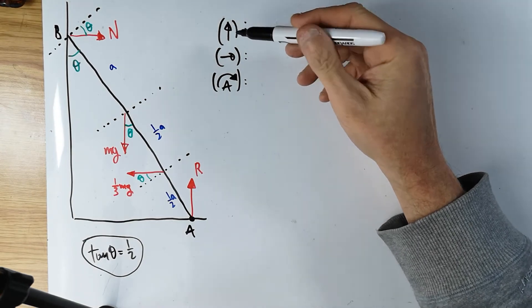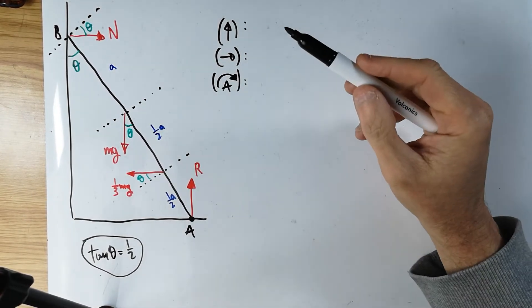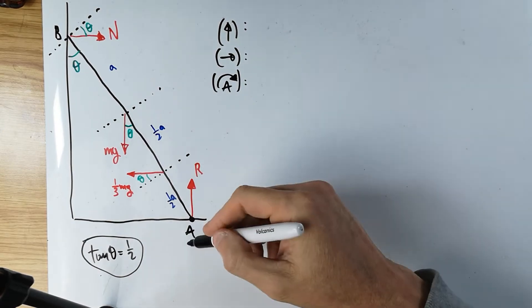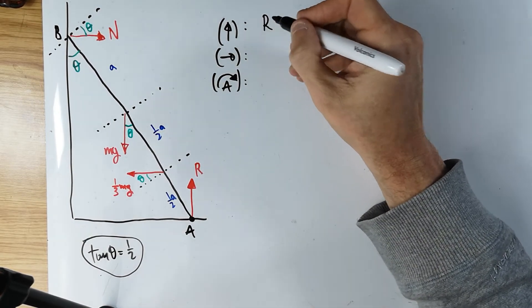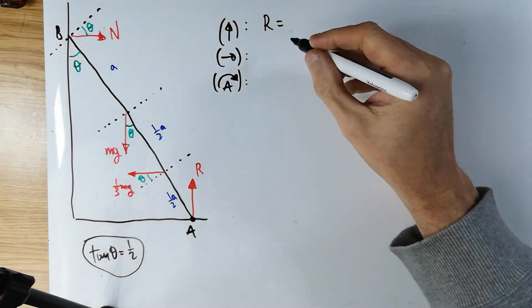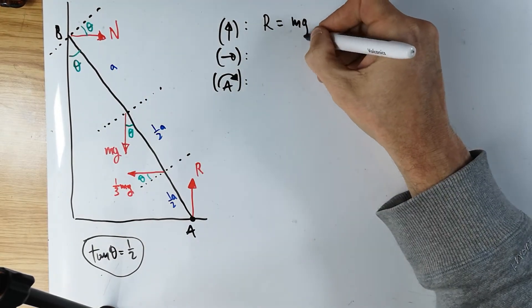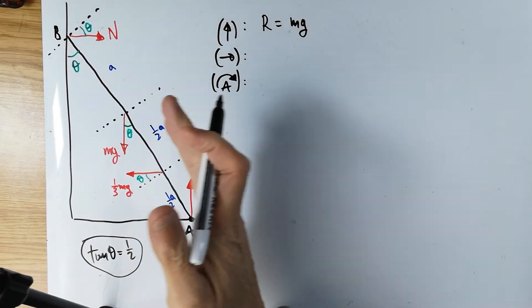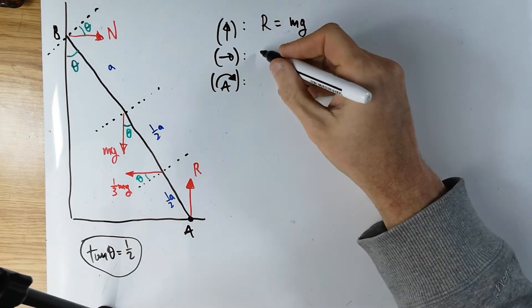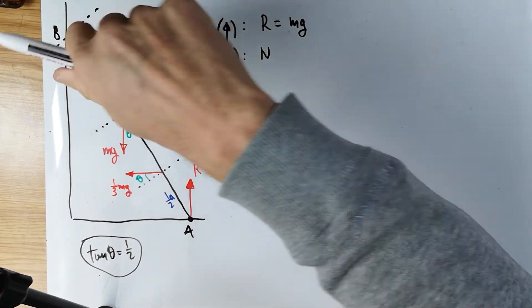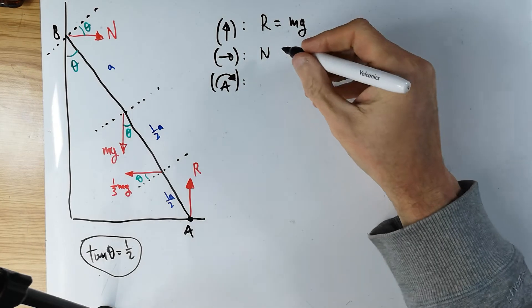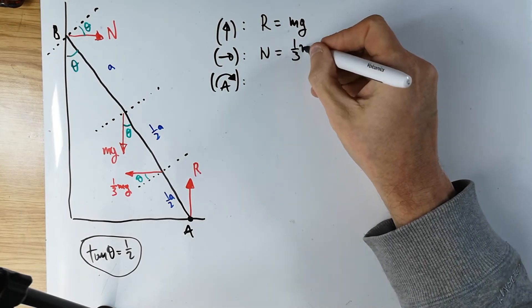I don't think in an exam there will be a problem using colours in the diagram, because the diagram usually, for most boards, it doesn't get marked. Okay, so here is now the balancing. Forces up equal forces down. R is acting upwards, nothing else up, therefore must be equal to the Mg, which is pointing downwards. Forces pulling to the left equal forces pulling to the right. N, acting to the right, is equal to one third Mg, acting to the left.